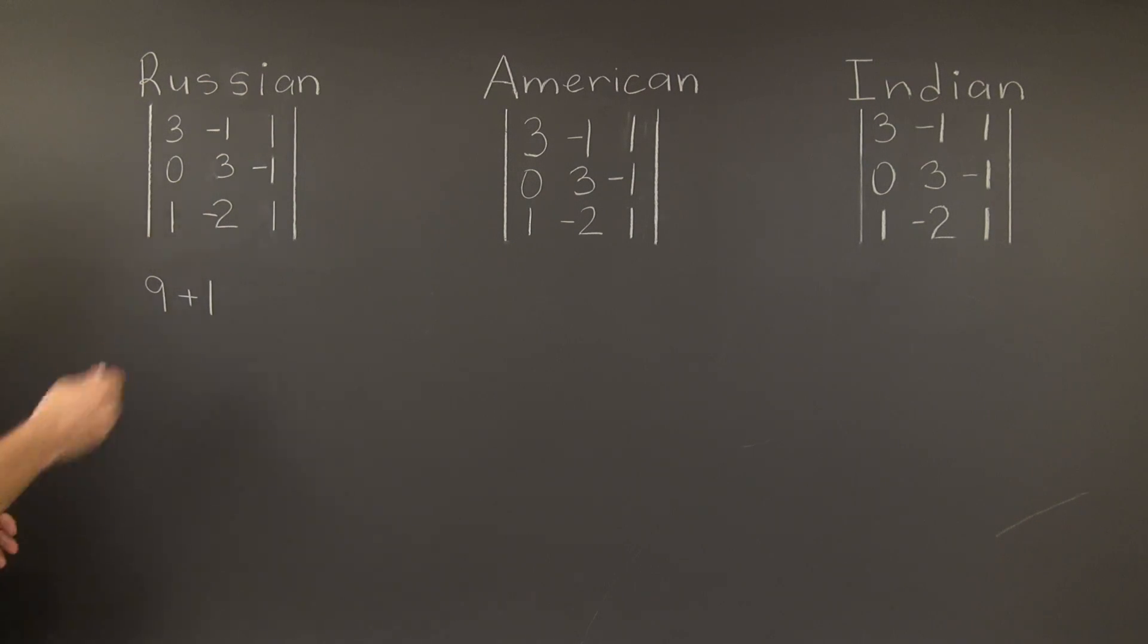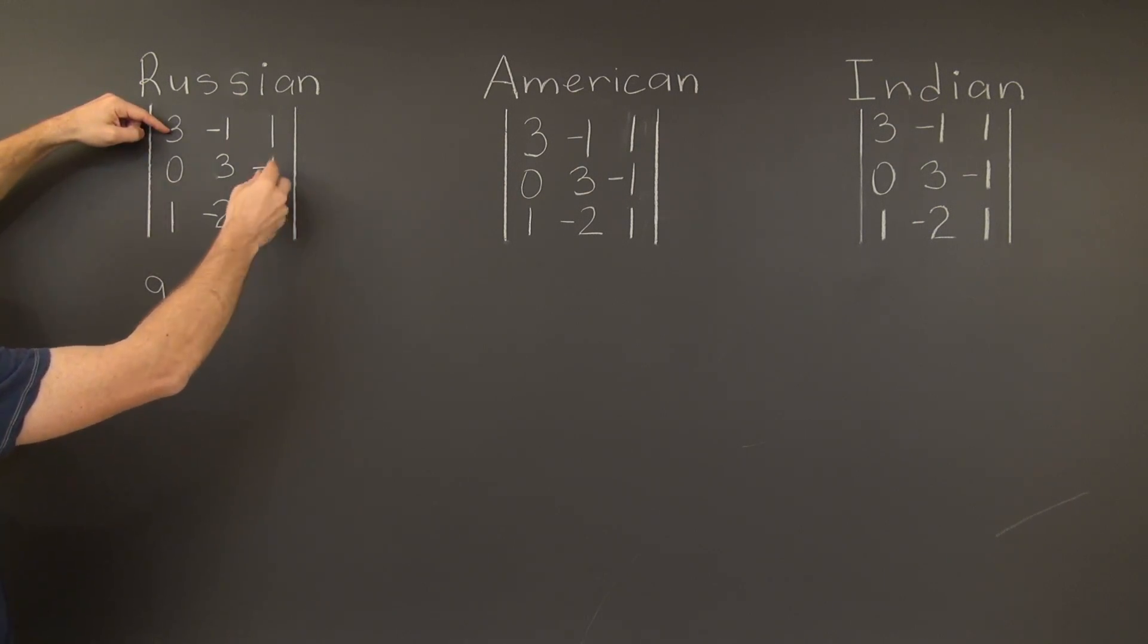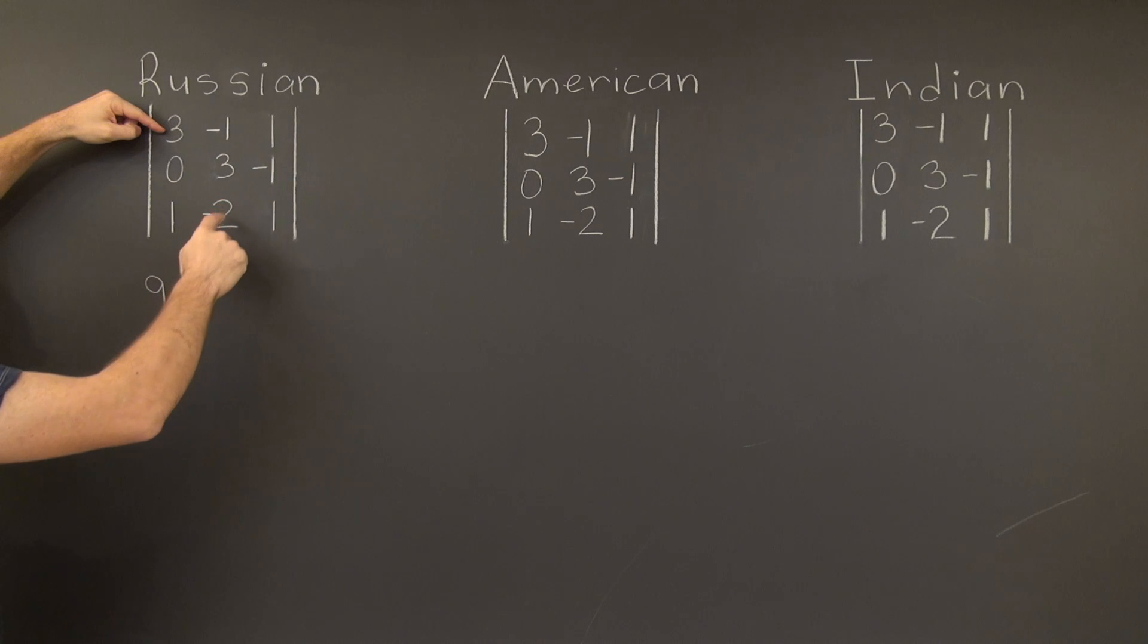The first negative term comes from the opposite diagonal itself and so it contributes a negative 3. The next one comes from this triangle that has a side parallel to the opposite diagonal and this term will contribute a negative 6. Minus 1 times minus 2 times 3 is 6, but once again these are negative terms.